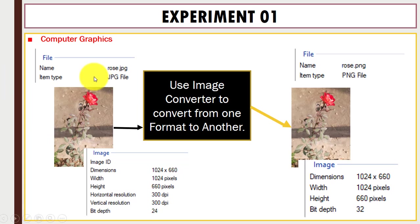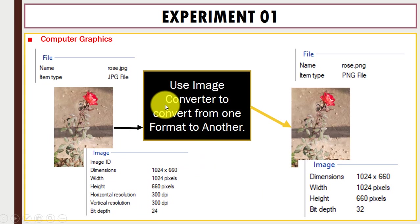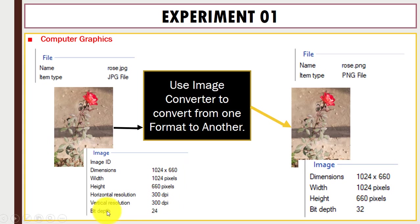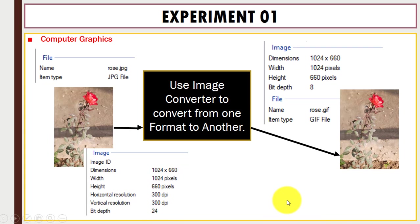For example, you can see we have an image whose file name is .jpg. You can see the details about this image. After that, with the help of a converter, this is converted into PNG. Now you can see the details about the PNG image — there is a change in the bit depth: in JPG it is 24, and in PNG it is 32.